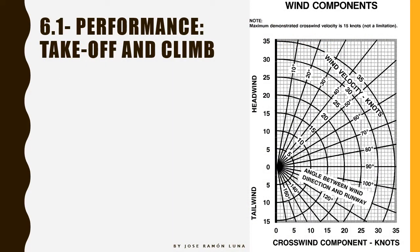Let's begin with the performances of the Cessna 172 on take-off and climb. As a quick reminder, go to Section 5 of your POH if you want to know more about performance — that's where you can find more information. The first chart we're going to look at is the crosswind component chart. There are multiple ways of calculating crosswind — formulas, sine, cosine — but in this part I'm just going to talk about the chart.